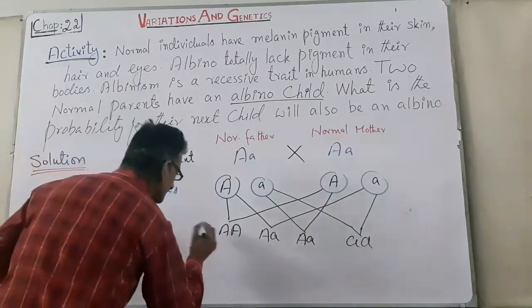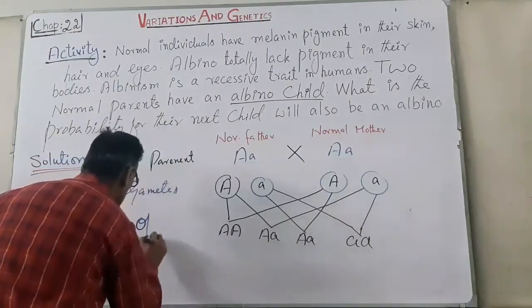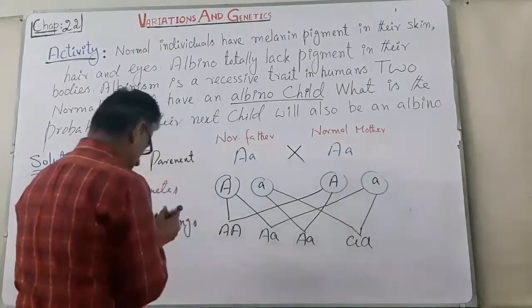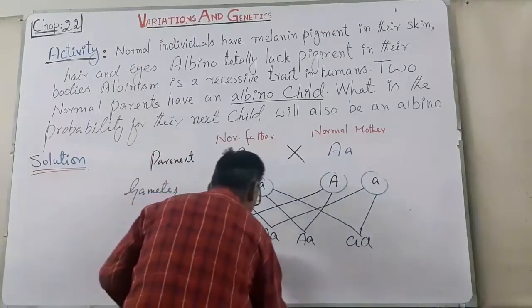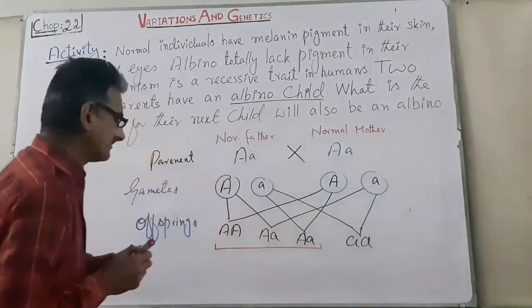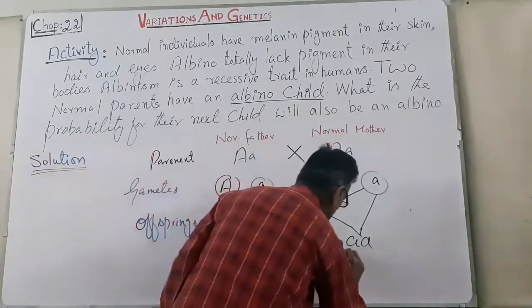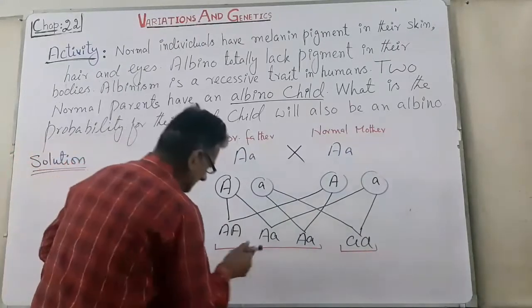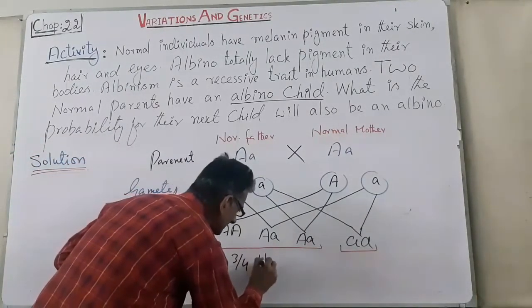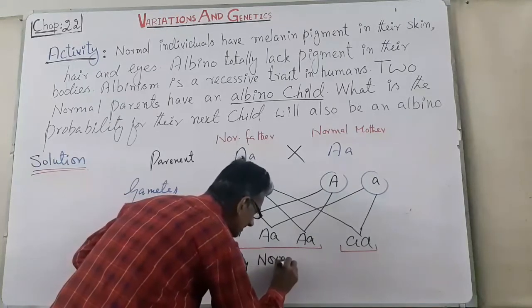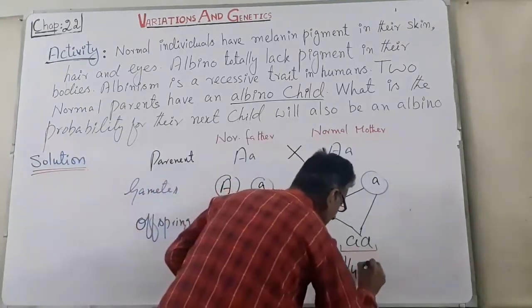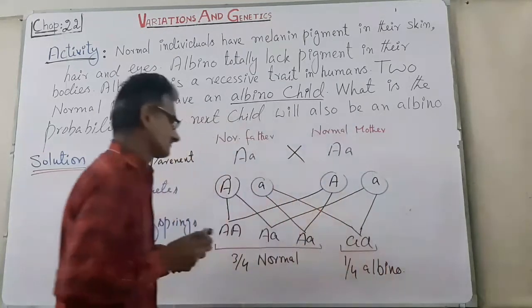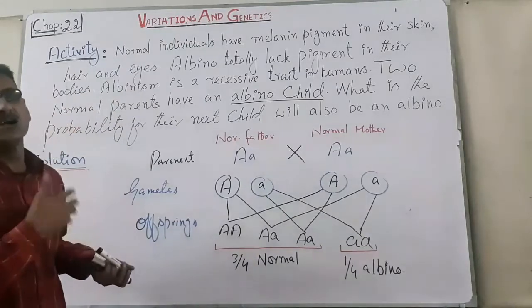These are the four offspring genotypes. Three of these offspring are normal — capital A capital A, capital A small a, and capital A small a — and one offspring is albino — small a small a. So the ratio is three-fourths normal and one-fourth albino. This is the solution.